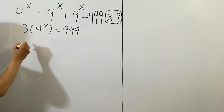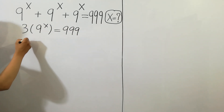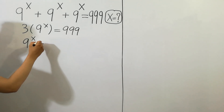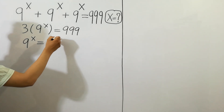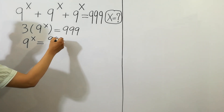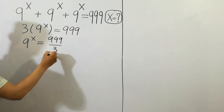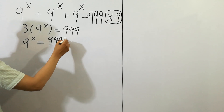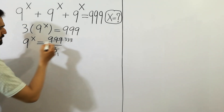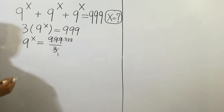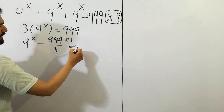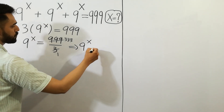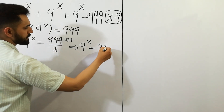So 9 to the power x is equal to 999 divided by 3. Since 3 times 333 is equal to 999, we can write 9 to the power x is equal to 333.